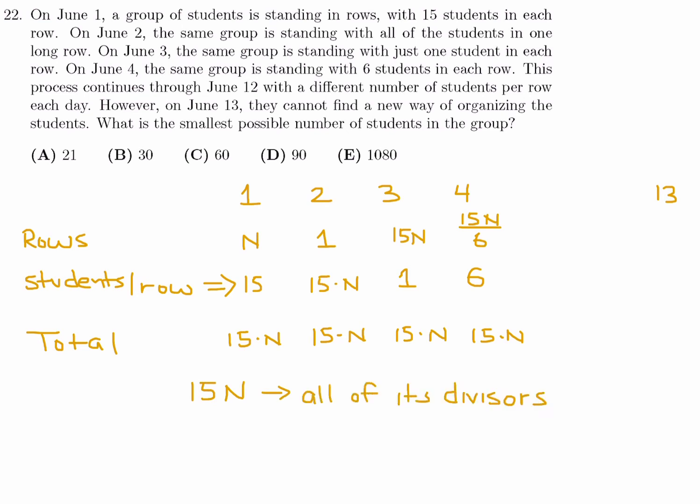So, basically, what this means is that this part of the table is all the divisors of 15n. So, 15n, all of its divisors. And so far, they just gave you a few. 15, 15 times n, one, six. But they're saying that you can only do this until June 12th. So, that means there's only going to be 12 divisors. Each day from June 1st to June 12th will have one of the 12 divisors. When you get to June 13th, you won't be able to find any new way of organizing it.